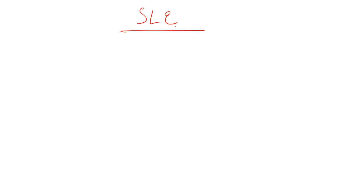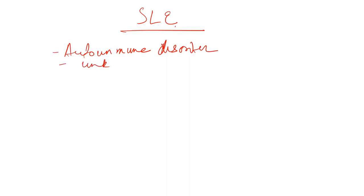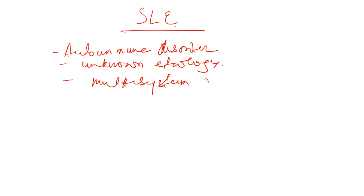Hello everyone, now we will be discussing systemic lupus erythematosus, also known as SLE. So what is SLE? It is an autoimmune multi-system disorder of unknown etiology. It is an autoimmune disorder, it has an unknown etiology, and it is a multi-system disorder.